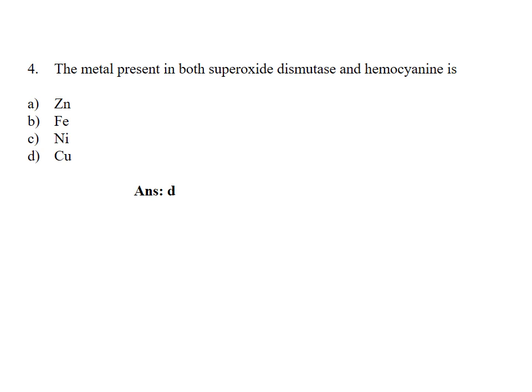The metal present in both superoxide dismutase and hemocyanin is: Option A, Zinc; B, Iron; C, Nickel; D, Copper. Answer Option D, Copper.